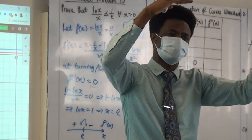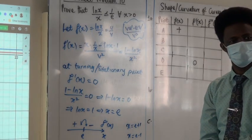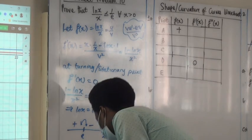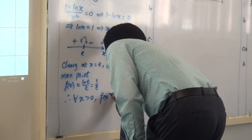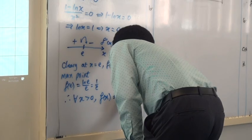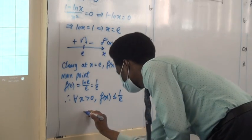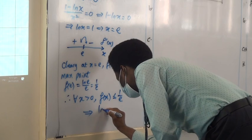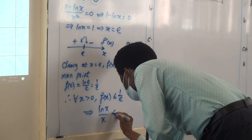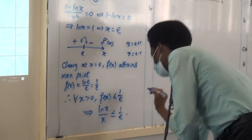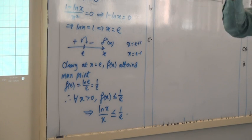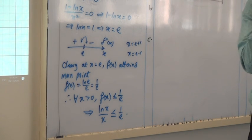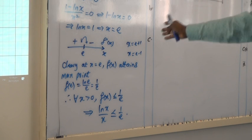Everything is at most at that point, and this is the proof. Therefore, for all x above 0, f(x) is less than or equal to 1 over e, which implies that ln(x) over x is at most 1 over e. That concludes your proof. When you see a less than or equal to inequality or greater than or equal to inequality, even in differentiation, it could be used.